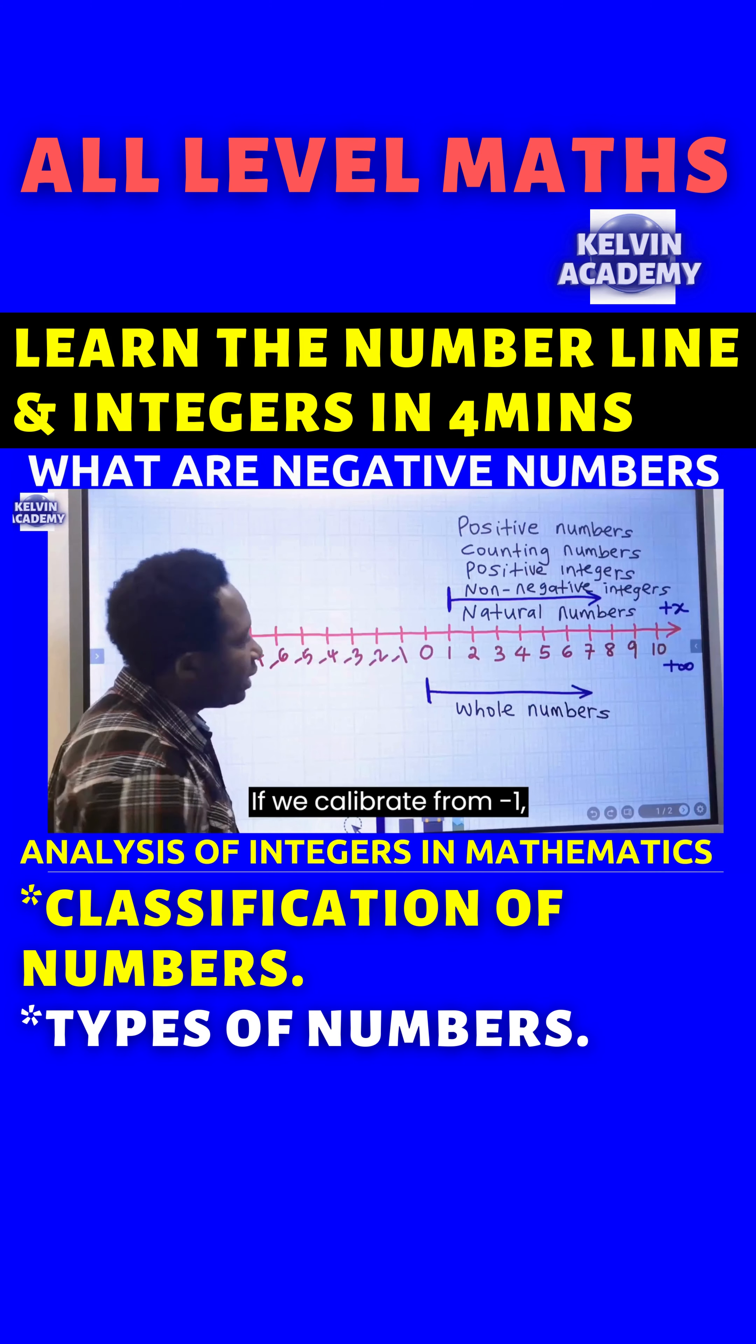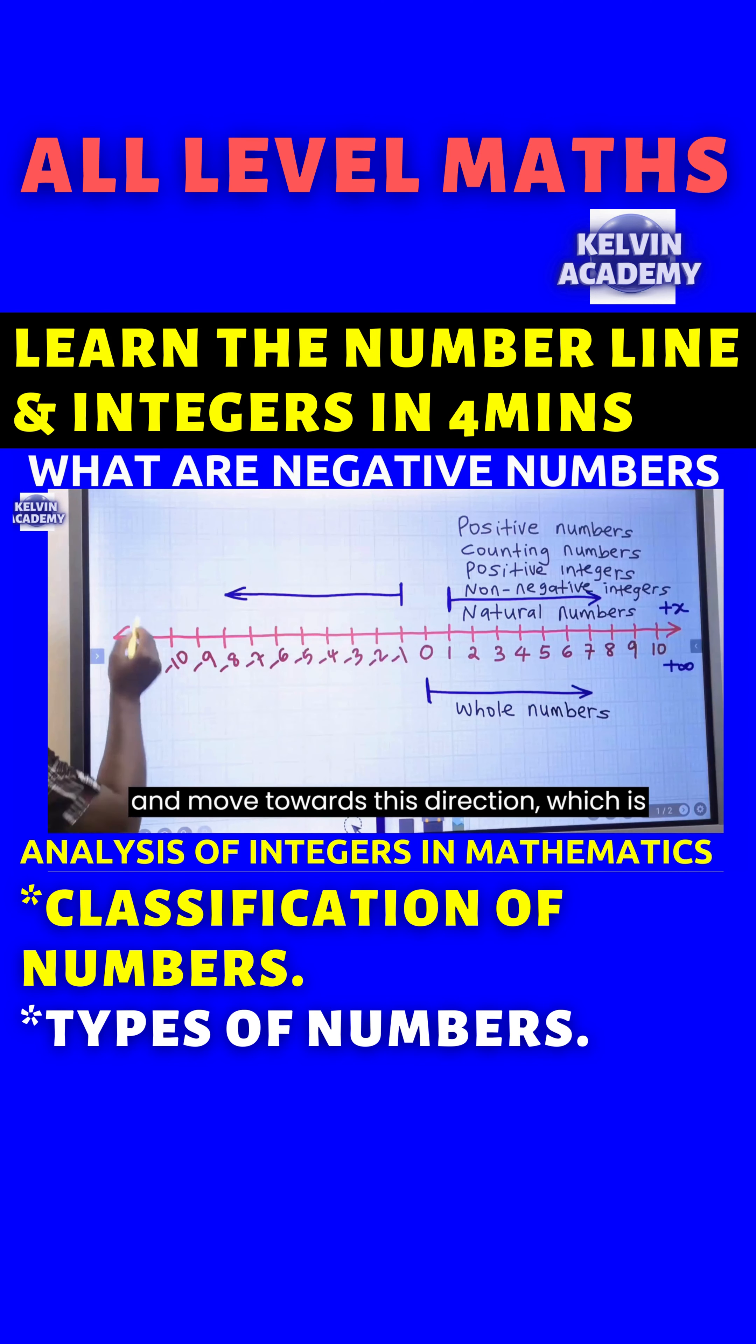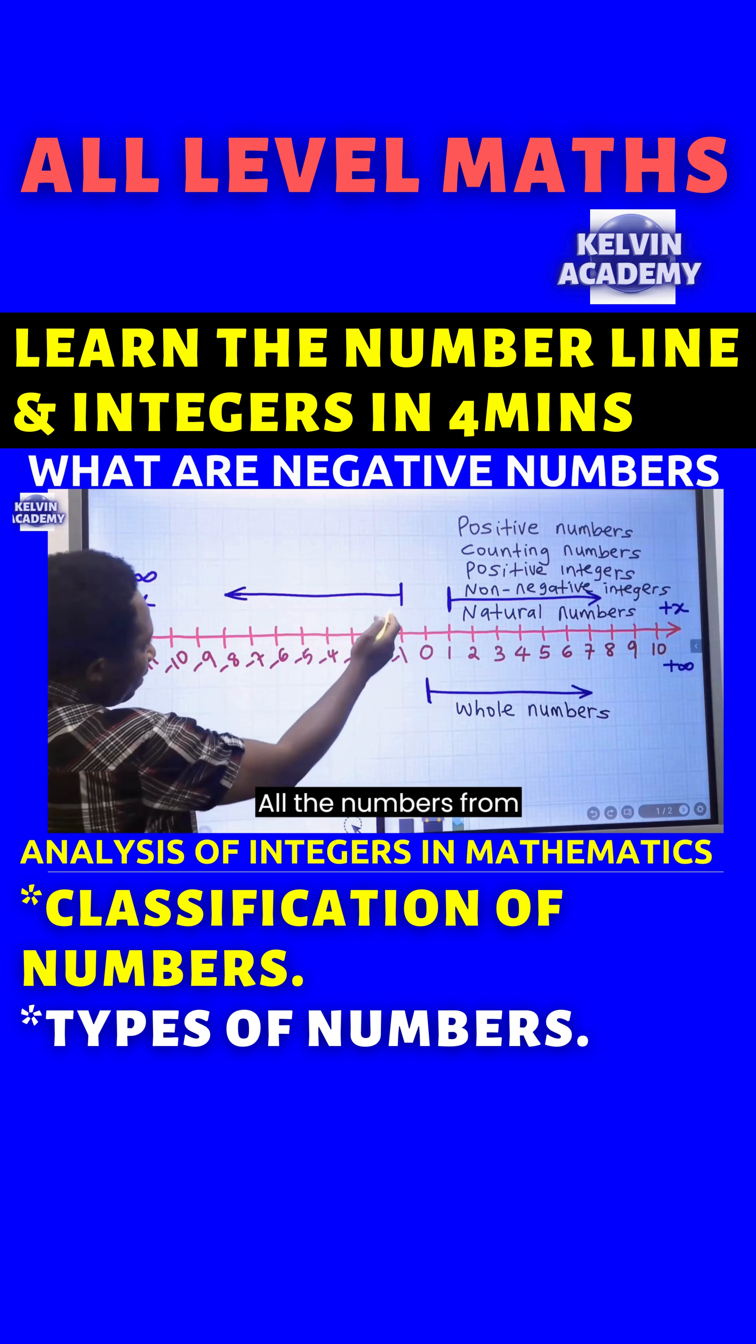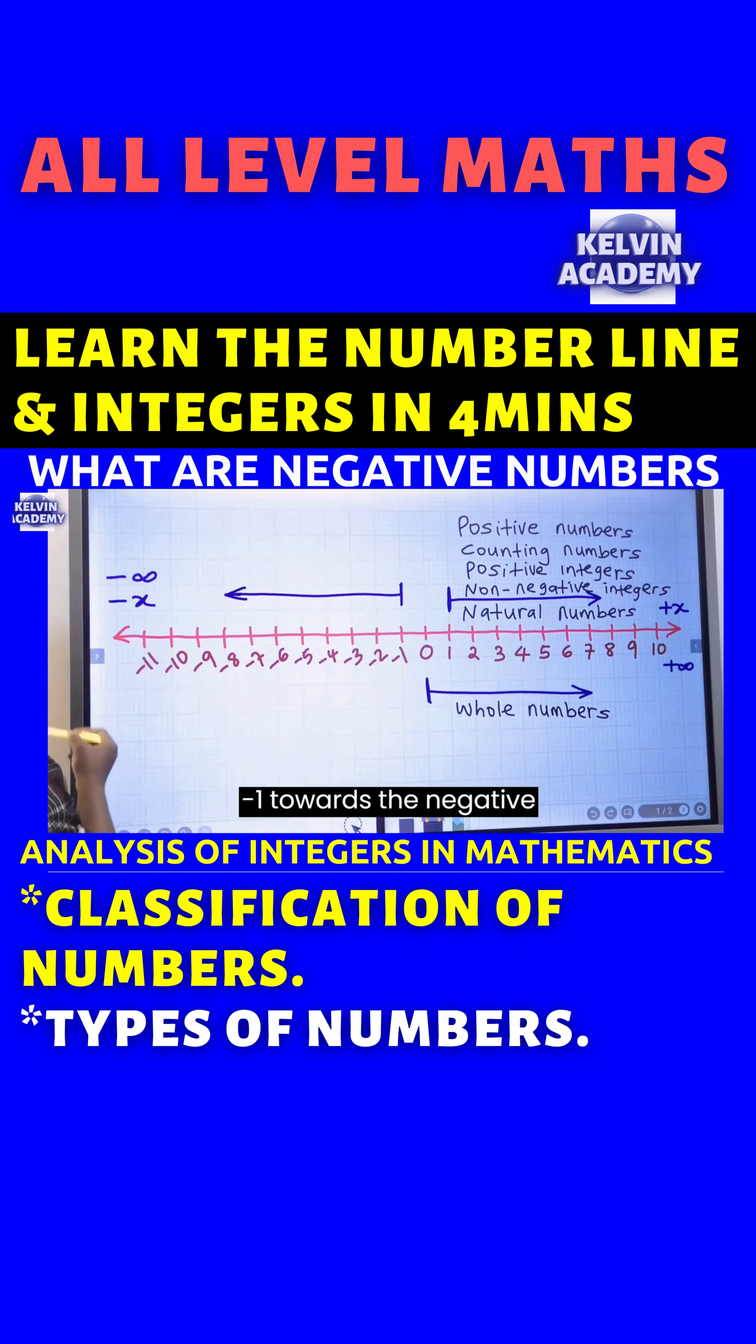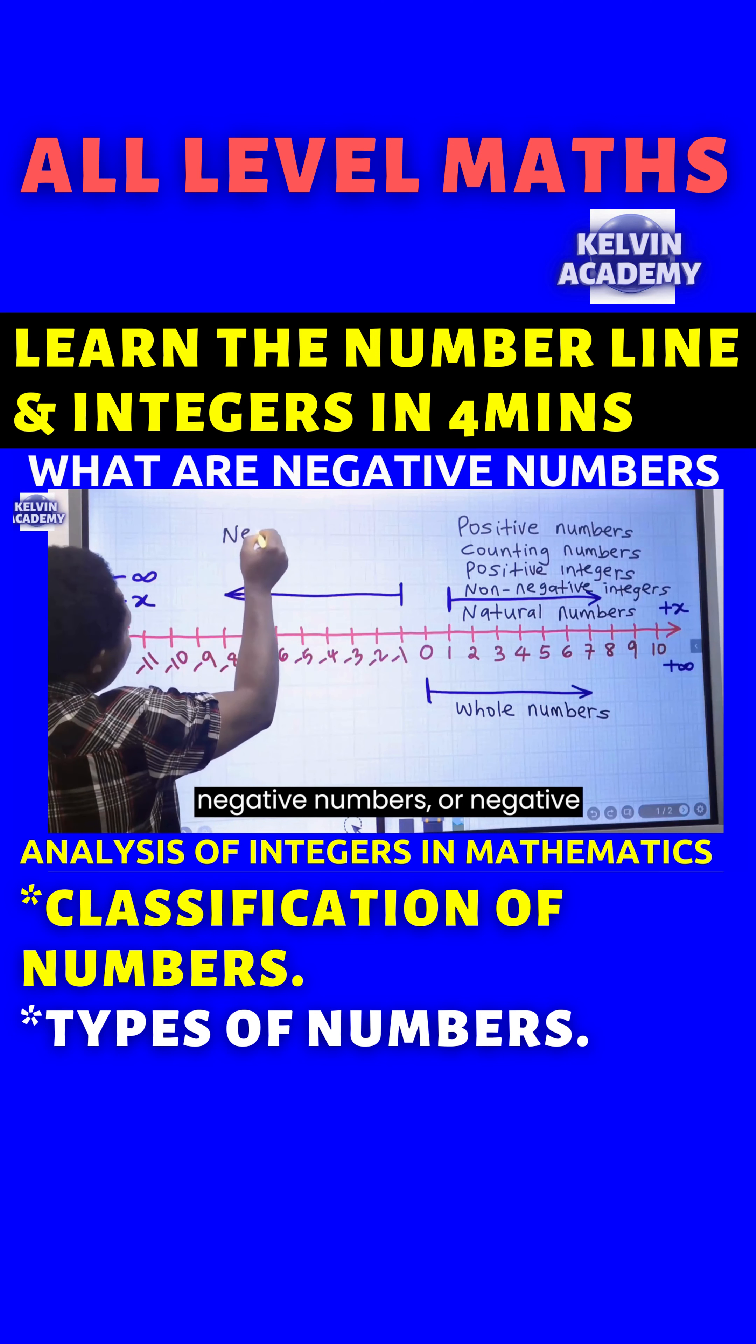If we calibrate from minus 1 and move towards this direction, which is towards the negative infinity, we can also represent this as minus x. All the numbers from minus 1 towards the negative infinity are simply known as negative numbers or negative integers.